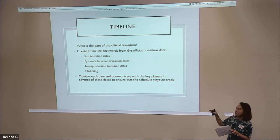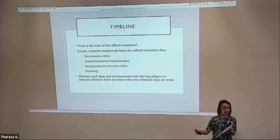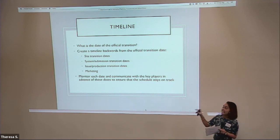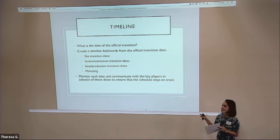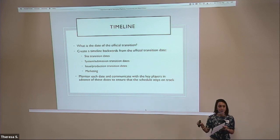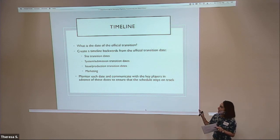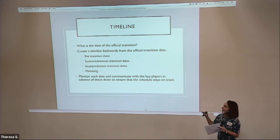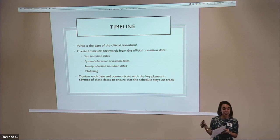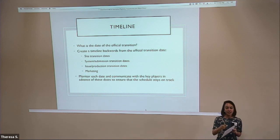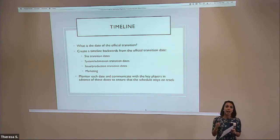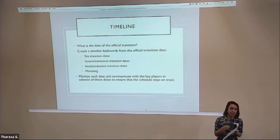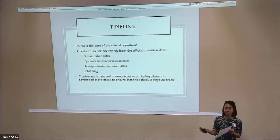Once you have that official transition date, I would recommend creating a timeline backwards from that date of all the transition dates you need to hit. Site transition dates can be really important — we'll go into that in more depth. Submission system transition dates, and your issue and production transition dates are also really important. At what point will accepted papers from the old publisher start moving to the new publisher?